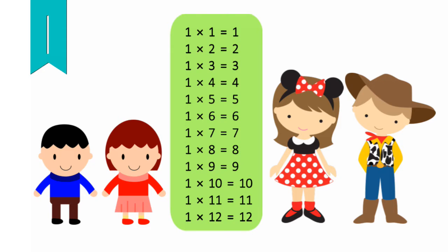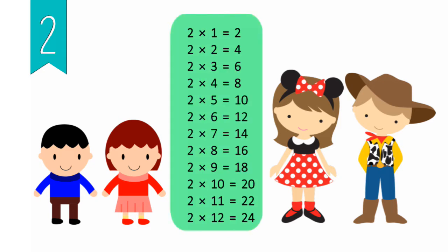2 x 1 equals 2, 2 x 2 equals 4, 2 x 3 equals 6, 2 x 4 equals 8, 2 x 5 equals 10, 2 x 6 equals 12, 2 x 7 equals 14, 2 x 8 equals 16, 2 x 9 equals 18, 2 x 10 equals 20, 2 x 11 equals 22, 2 x 12 equals 24.